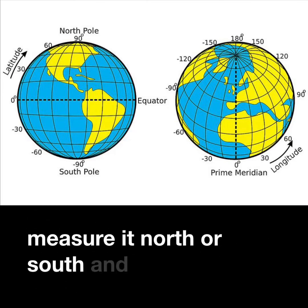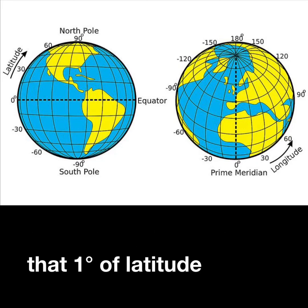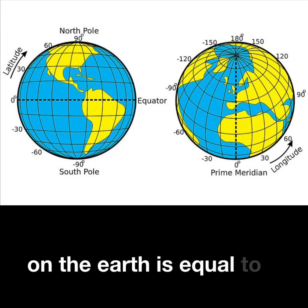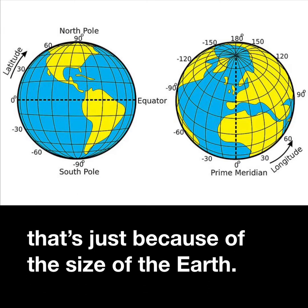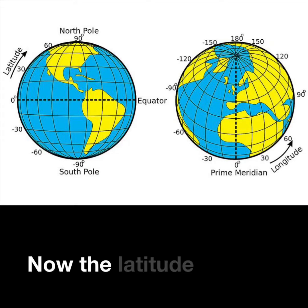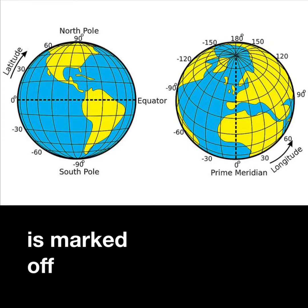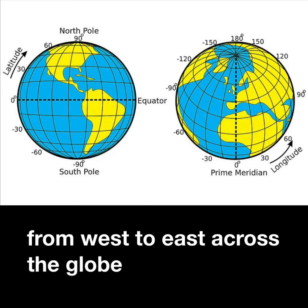We measure latitude north or south, and it turns out that one degree of latitude on the earth is equal to 69 miles or 111 kilometers, and that's just because of the size of the earth. Latitude is marked off by lines that run from west to east across the globe.